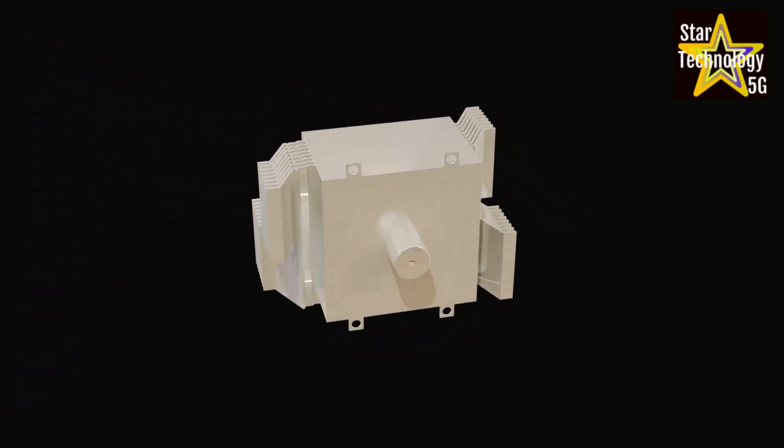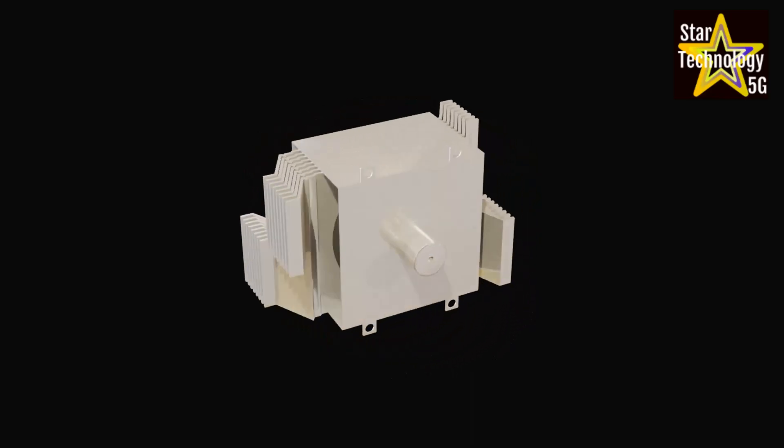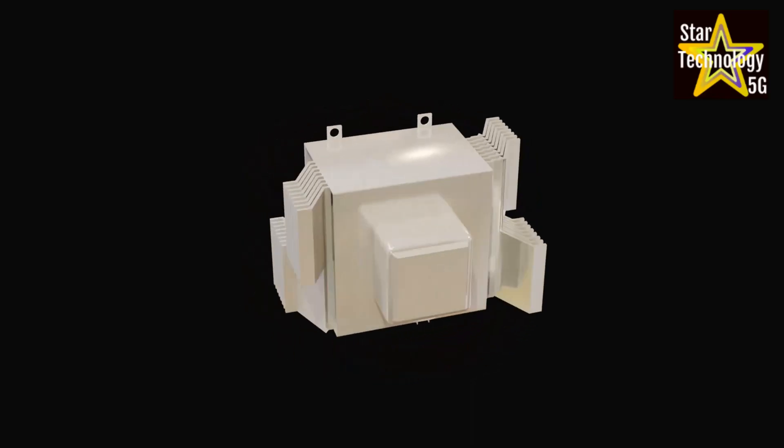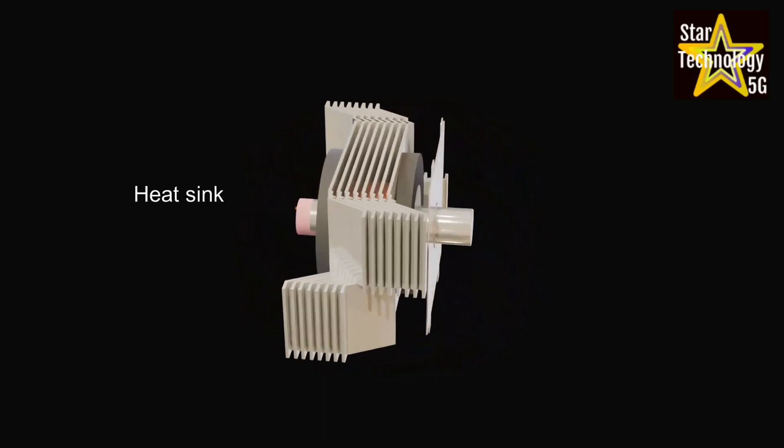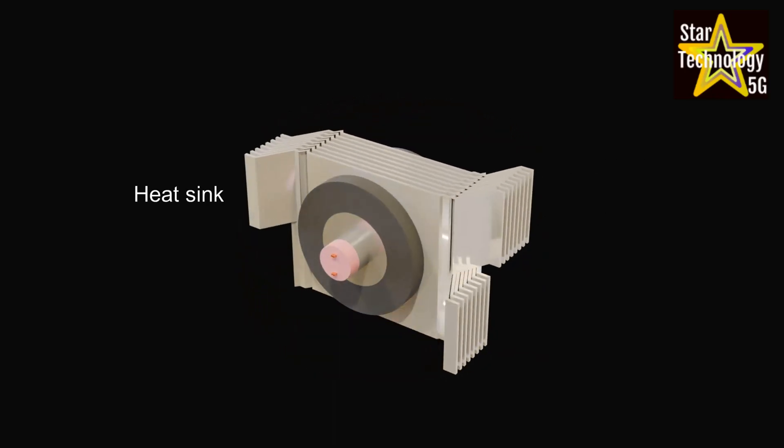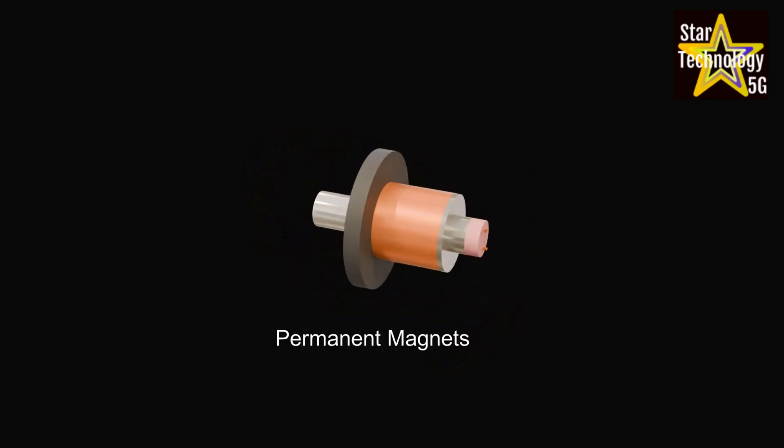A microwave magnetron is a type of vacuum tube that generates microwaves. If we disassemble this magnetron, we find an outer casing with a connection box, a heat sink that absorbs the heat and keeps the magnetron cool, and two permanent magnets that provide magnetic fields.